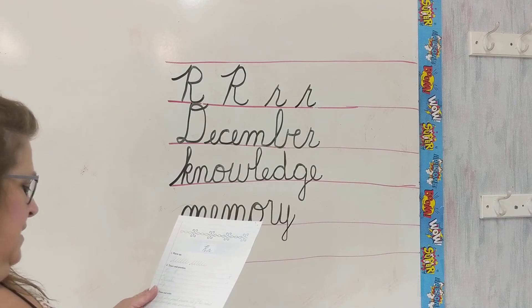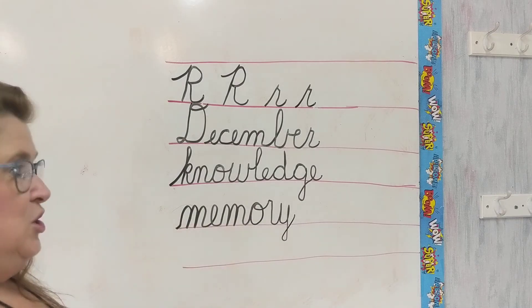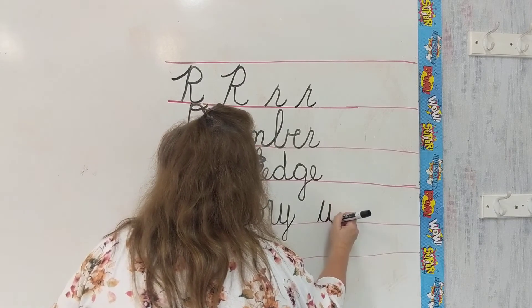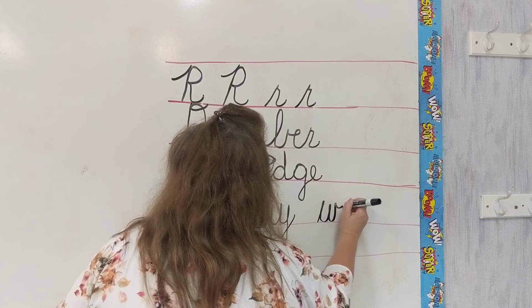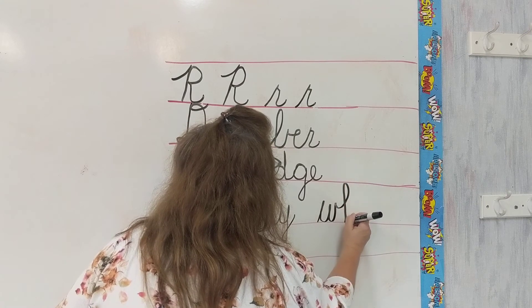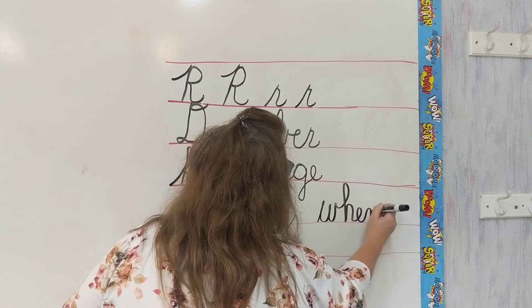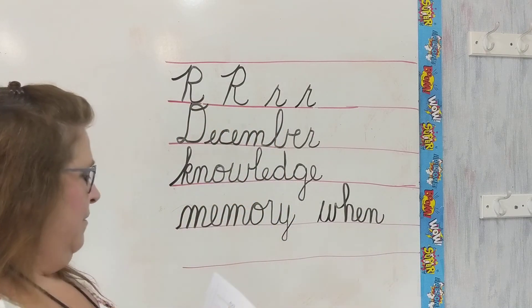And then let's write the word when. You will be writing when today. So W. Retrace back down just a little bit and swing out to go into my H. W-H-E-N. And let's have two humps. When. All right.